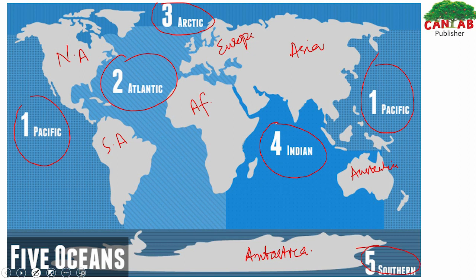The ocean between Asia, Africa, and Australia is the Indian Ocean. And here is where Pakistan is located. This is the Arabian Sea that I just mentioned. Pakistan is situated on the north of the Arabian Sea. So these are the five oceans and their positions as shown on the map.